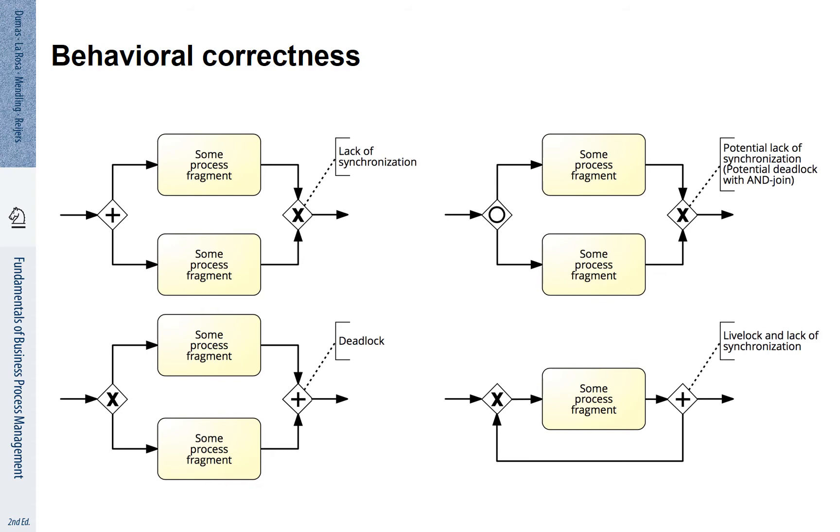On the left hand side bottom is an example of a deadlock. On the left hand side is an XOR split and that makes sure that only one of the subsequent options is activated. The AND join on the right hand side waits for both branches to complete. But as only one of these branches is activated, it is never possible that both of them would complete. That means the process gets stuck. It gets deadlocked at this AND join.